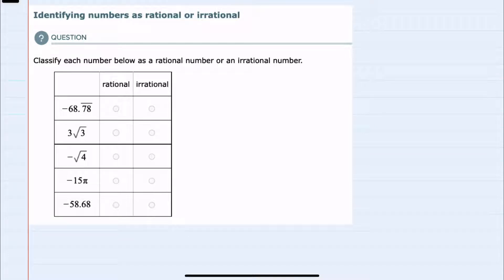In this video, I'll be helping you with the Alex problem type called identifying numbers as rational or irrational. We'll start by recalling that rational numbers are numbers that can be written as an integer over a non-zero integer.